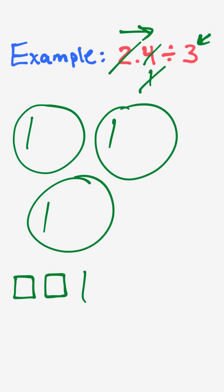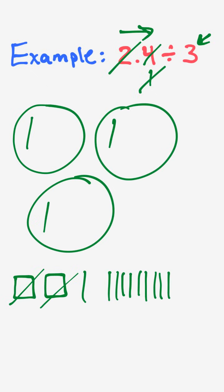So I'm done with distributing. Now I have to regroup what's on the outside in order to redistribute it amongst the groups. I have twenty tenths that I need to draw here — ten tenths for this whole and ten tenths for that second whole, counting out all ten for each.